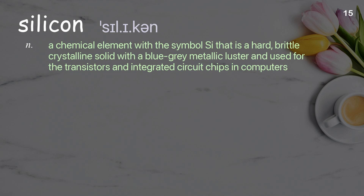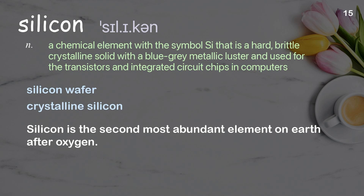Silicon. A chemical element with the symbol Si that is a hard, brittle crystalline solid with a blue-gray metallic luster, used for transistors and integrated circuit chips in computers. Examples: Silicon wafer. Crystalline silicon. Silicon is the second most abundant element on Earth after oxygen.